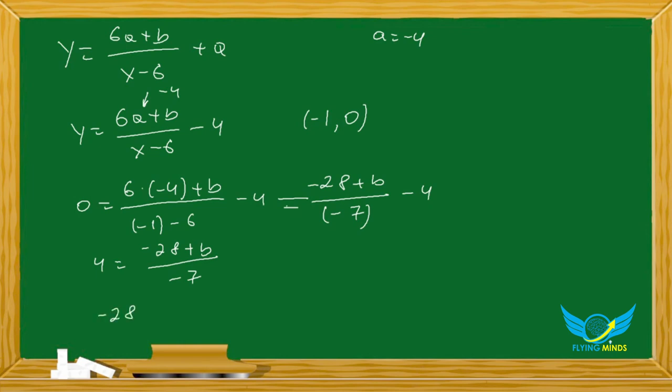Sorry, I made an error here. This is not 28, this is 24. So we have negative 24 plus b equals negative 28, and from here b equals negative 4. So we found all our values: a equals negative 4, b equals negative 4, c equals 1, and d equals 6.